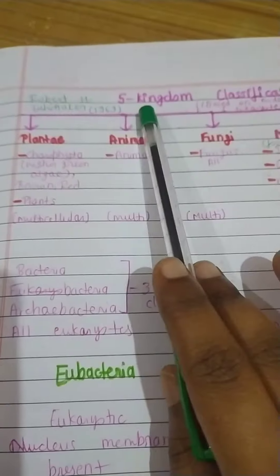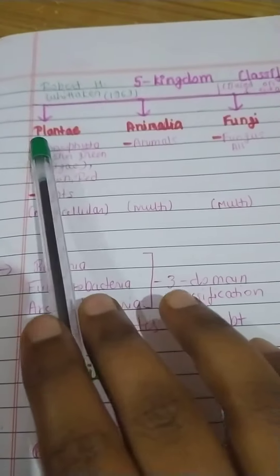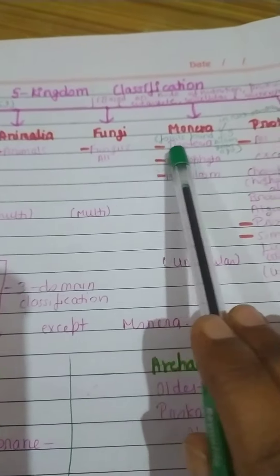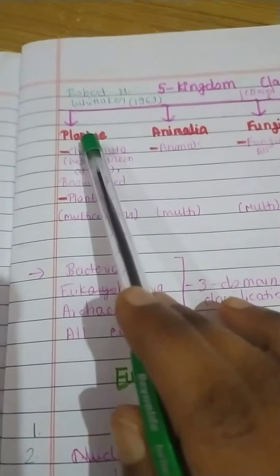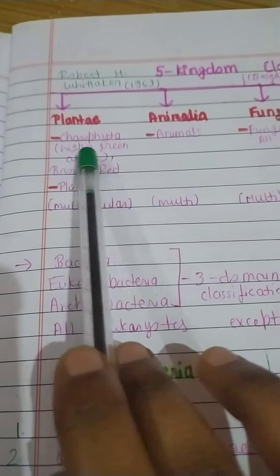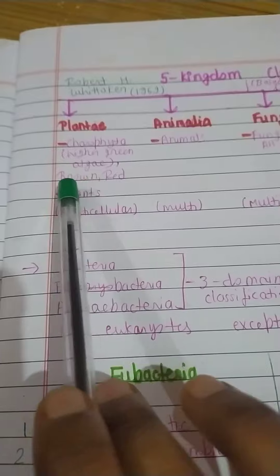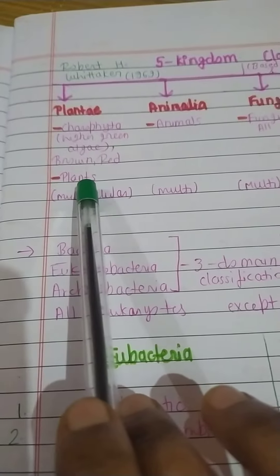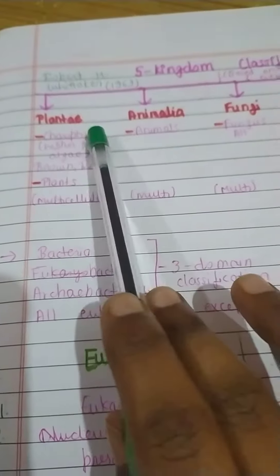The five kingdoms given by Robert H. Whittaker are: first Plantae, second Animalia, third Fungi, fourth Monera, and fifth Protista. In Plantae, we have Chlorophyta — which we call higher green algae — Phaeophyta which we call brown algae, and Rhodophyta which we call red algae. Both algae and plants come under Plantae.